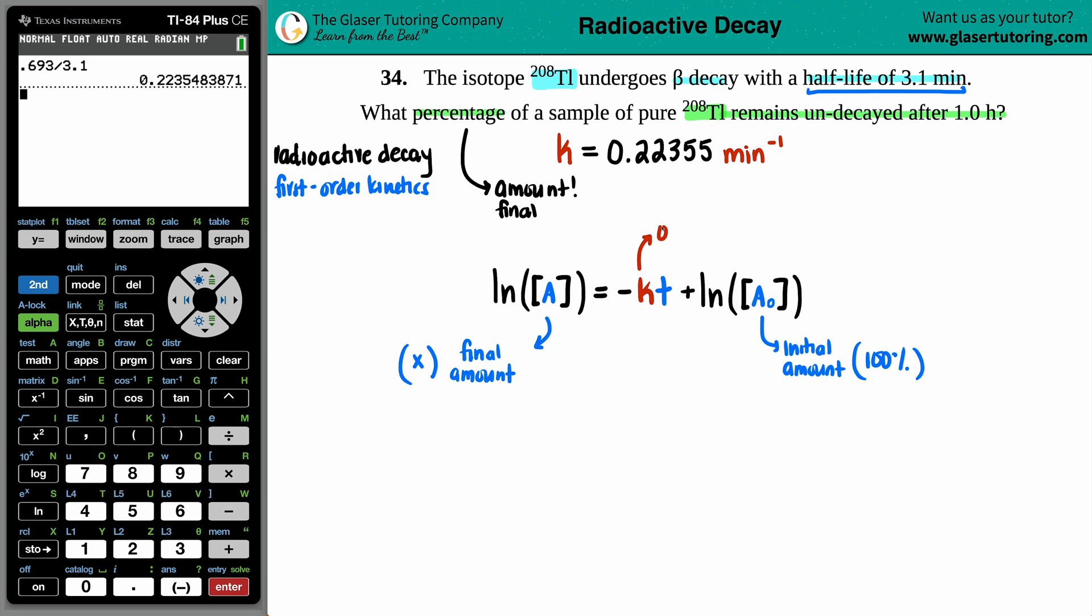Now, we did discuss the rate constant. That's the 0.22355. And now the t is the random time that has elapsed. And in our case, they say, what percentage of the sample remains undecayed after one hour? So that's the time. But now here comes the thing. Always watch out for your units. If the half-life was in minutes, and the k value was in per minutes, I can't use an hour for my t. The units have to match. So if I'm using minutes, I just got to take that one hour and convert it into minutes. But how do we go from an hour to a minute? You know, times it by 60. So one hour just equals 60 minutes. And now you got a 60 down here.